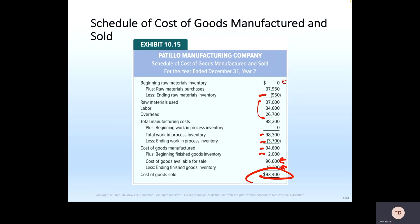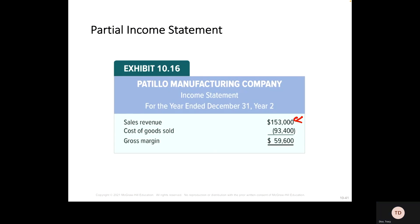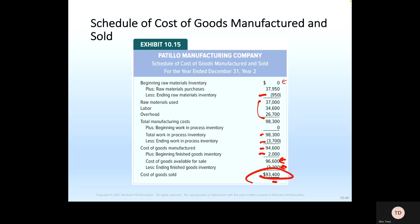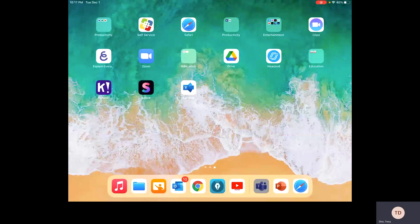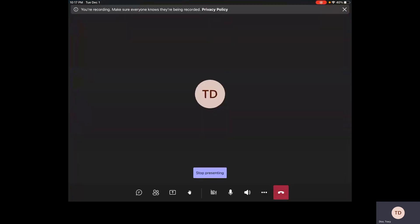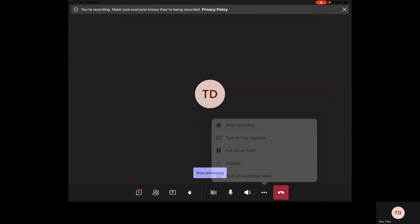Along with the schedule of cost of goods manufactured and sold, you can then look at a partial income statement. All this does is take your sales revenue and subtract cost of goods sold — revenue minus expenses — to give you your gross margin. That's the second part of the notes for Chapter 10.